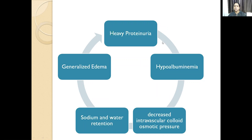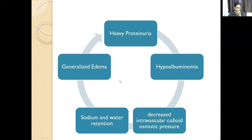Heavy proteinuria causes protein loss in the body, leading to hypoalbuminemia. Decreased osmotic pressure causes generalized edema. There is activation of the sympathetic system and pitting edema, because of the generalized edema caused by sodium and water retention. There is also reduction in the secretion of natriuretic factors such as atrial peptides.